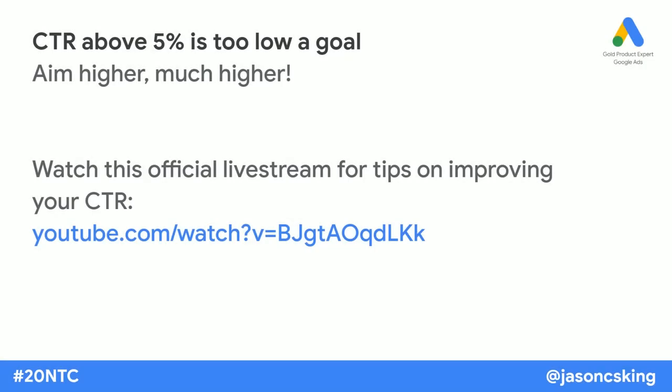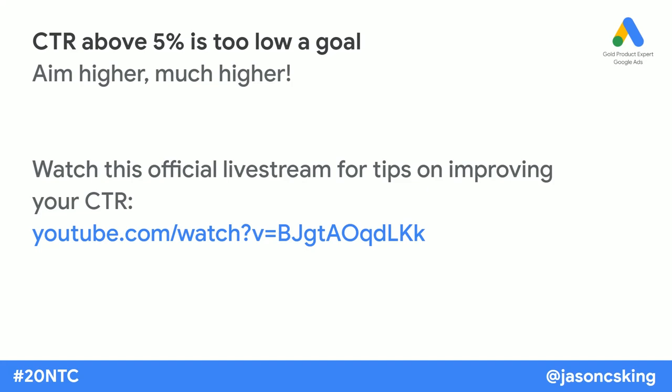You should aim to get as high a click-through rate as possible — that's the percentage of people shown your ad who click on it. A 5% click-through rate is the minimum allowed in an ad grants account, but don't settle for it. You should be doing double that — 10%, 12%. I've got one account managing around 15–16%, most of them around 10–12%, and a couple around 8%. There's an official live stream by the Ad Grants team with lots of tips on improving your click-through rate.